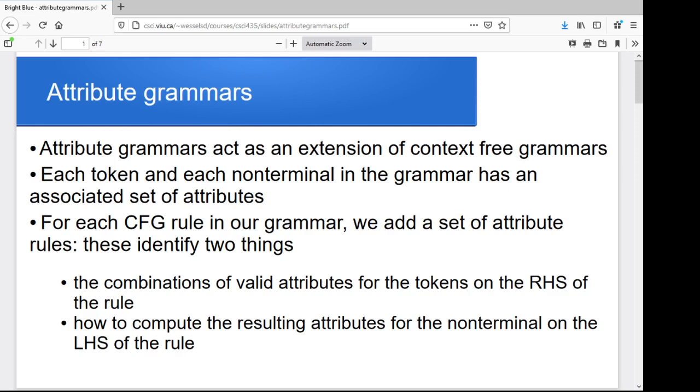And given those, how do we compute the resulting attributes for the non-terminal on the left? So given expression goes to x times y, given the current attributes for x times and y, what should the resulting attributes for our new variable be?